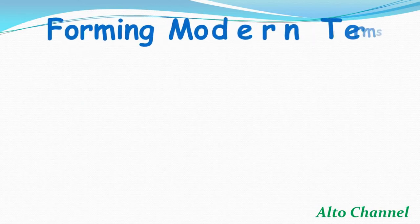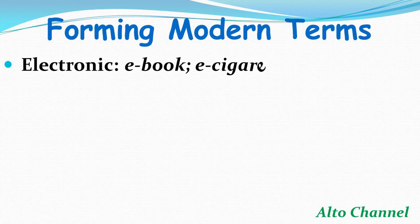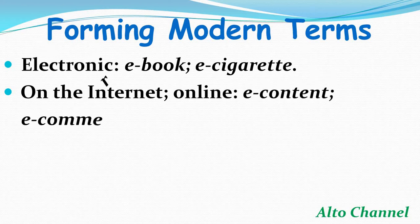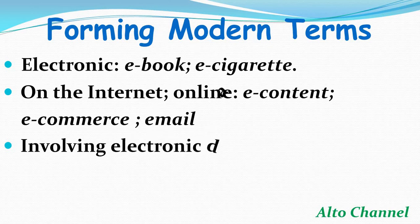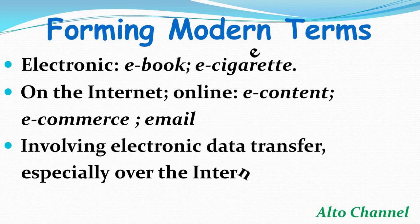Beside the previous meanings, there is also a specific use of a prefix in forming modern terms. The first one is related to electronic — for example, 'e-book' or 'e-cigarette', and things related to online such as 'e-content', which is content we can access on the internet, or 'e-commerce', economic activity we can do online. Also 'email', mail we can send and read online. The prefix 'e' can also involve electronic data transfer, especially over the internet — for example, 'e-banking', banking activity done online using internet data.